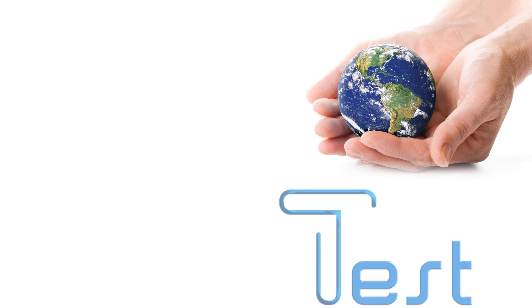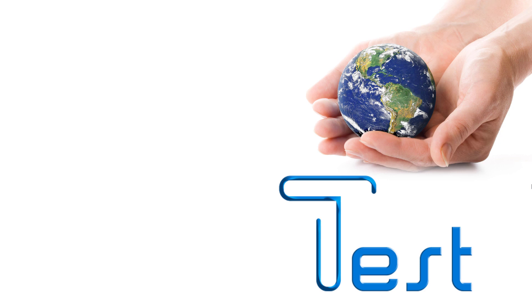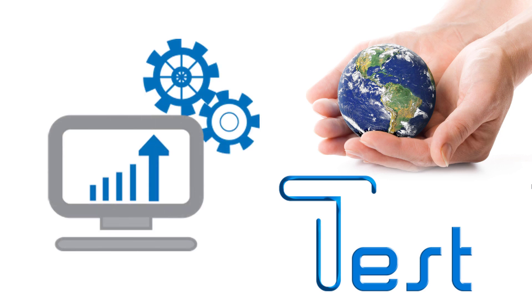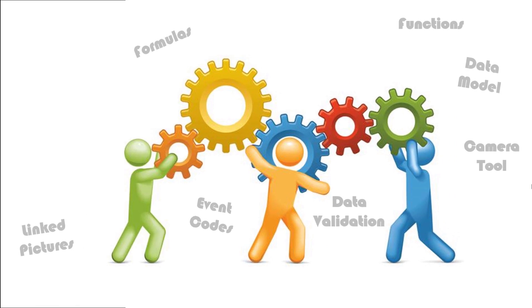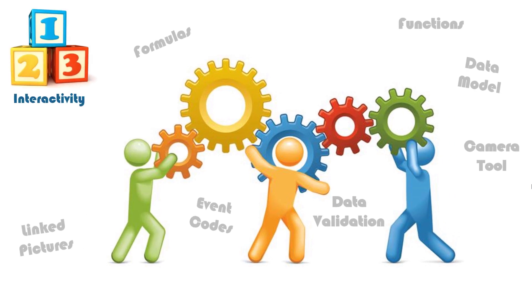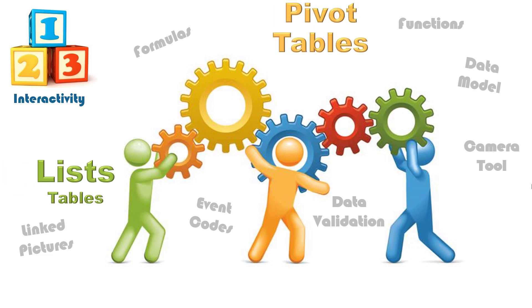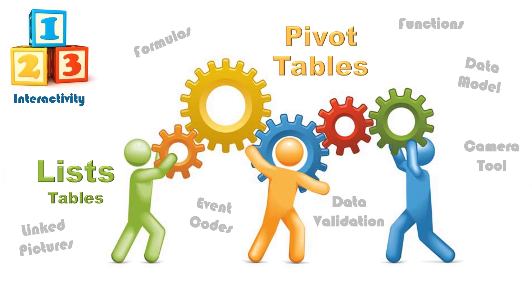Before putting your dashboard into the hands of end users, you need to test all elements and make sure the interactivity is working fine. There are three main types of interactivity besides using formulas and functions — I call them: lists, pivot tables, and controls.